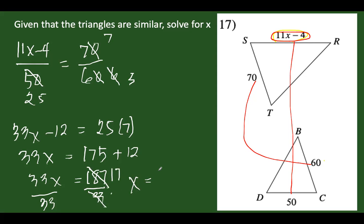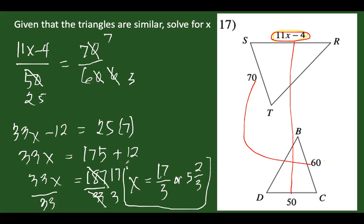So x equals 17 over 3, or equivalently 5 and 2 thirds. We can accept either form. Therefore, the value of x is 17 over 3. That's how we solve this kind of problem using similar triangles.